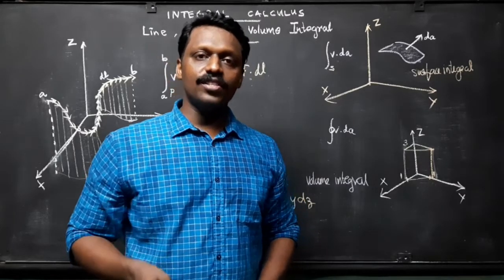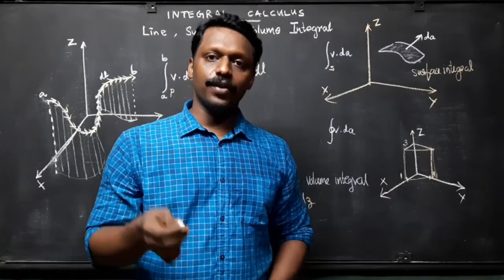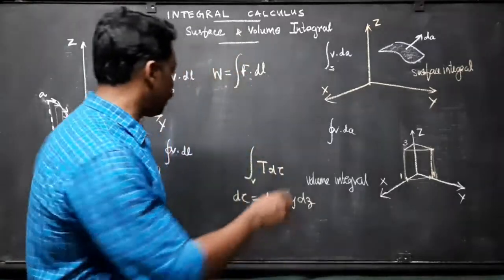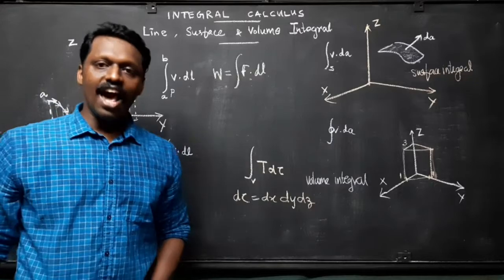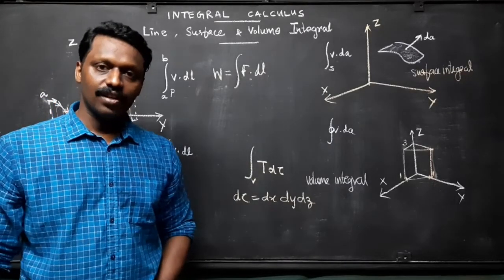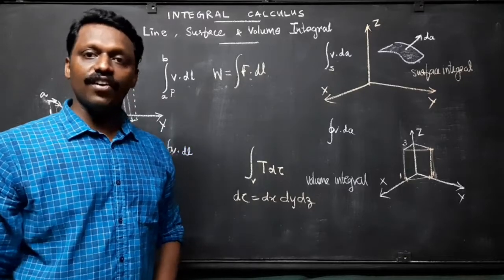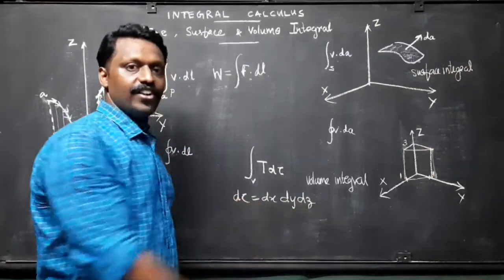Now we will discuss volume integrals. The volume integral is an expression of the form integral t d tau, where t is a scalar function and d tau is an infinitesimal volume element. In Cartesian coordinates, we can write d tau equals dx dy dz.